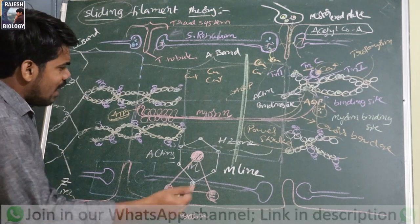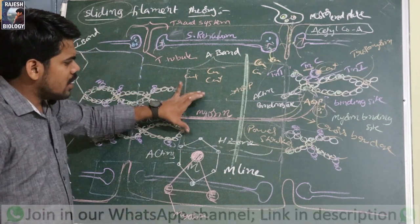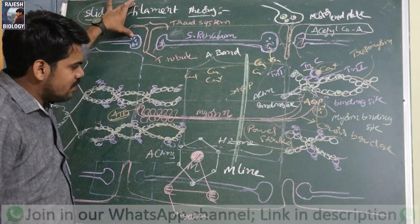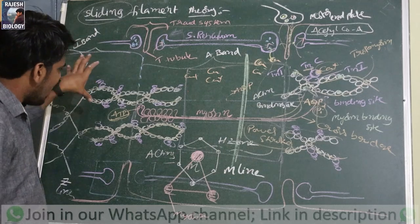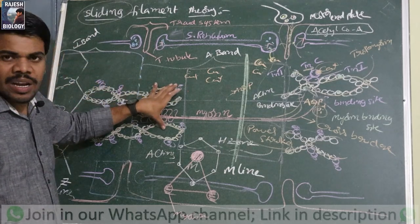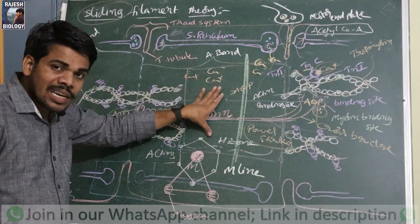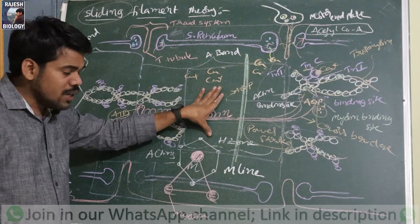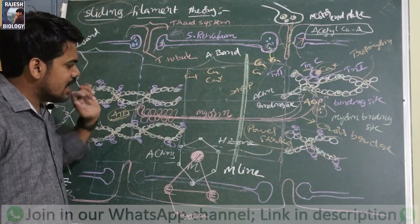So to summarize: actin filaments slide over the myosin — that is the sliding filament theory. In this process: I-band decreases, A-band remains constant, H-zone decreases and disappears, and the overlapping zone increases.